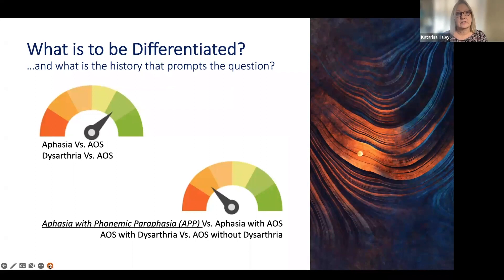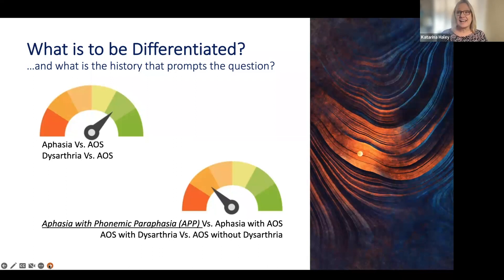Before we get into the studies, I want to mention the issue of differentiation. What is difficult in terms of the differential diagnosis of apraxia of speech? It really matters what the context is — sometimes the diagnosis is fairly easy and sometimes it's quite hard. We have these colorful visuals here for you to see, and you can decide where you are on this spectrum. Some people are more assertive or feel more competent in diagnosing apraxia of speech, and others are more hesitant. But I want to make the argument that certain things are pretty easy.